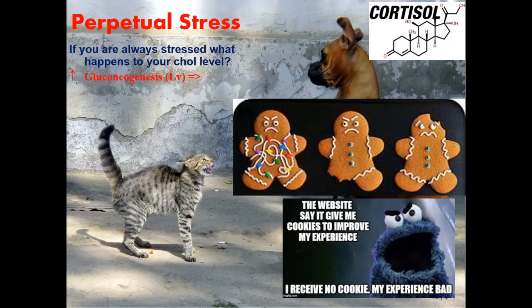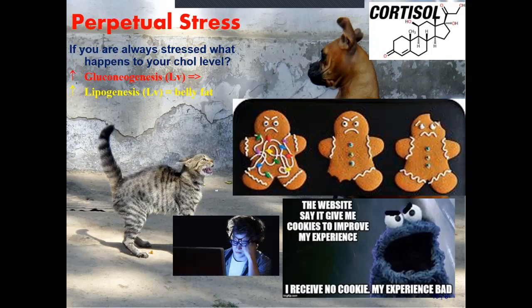So what's going to happen to all that glucose? You're going to store it as fat - that's what your liver does. It stores it as fat, especially around the liver. People who have perpetual stress start to gain weight, and often when the stress gets removed with no other changes, miraculously they lose the belly fat.